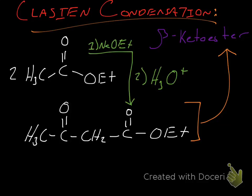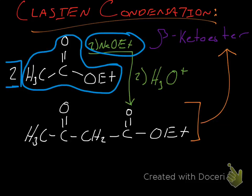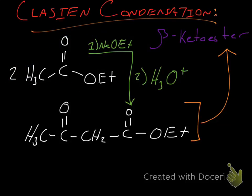We have sodium ethoxide as our strong base here. And what are our initial compounds? Well, we're using two equivalents of the same compound, so that means we can't be using an ester and another type of carbonyl compound — we have to be using two esters. So in this case we are using two esters. If we don't have two equivalents of ethyl acetate, this reaction will not proceed to the products that we want.